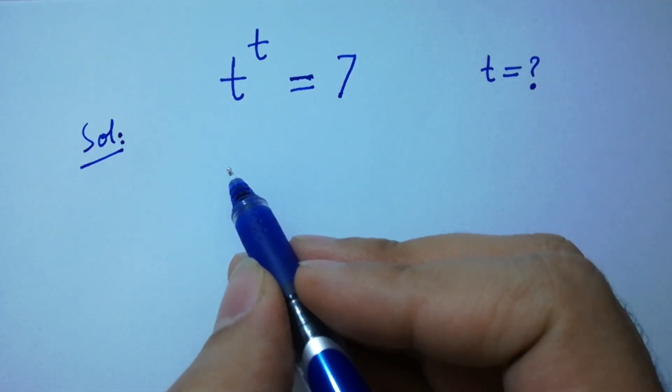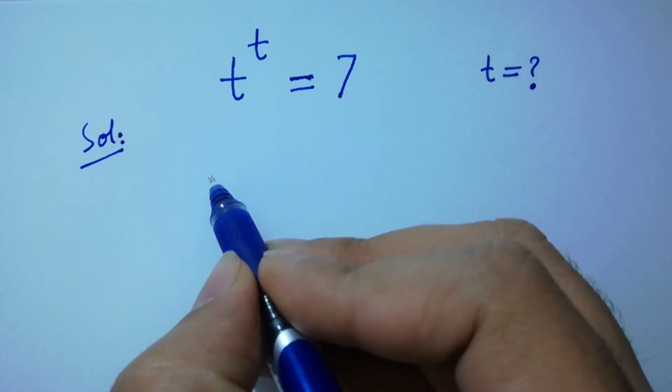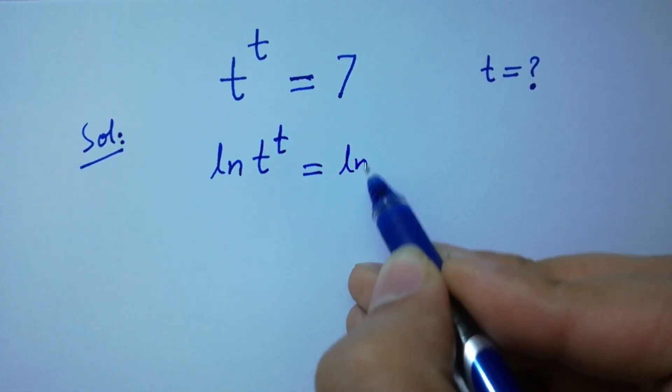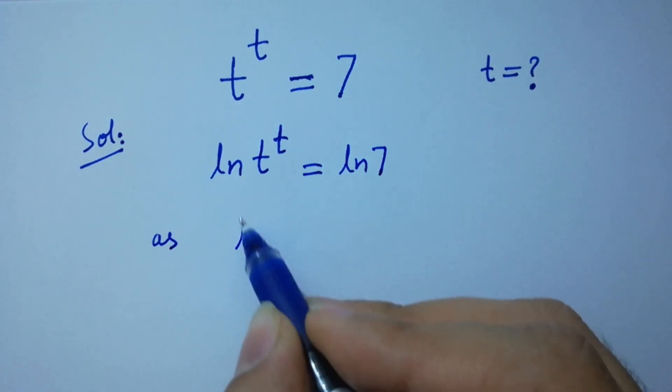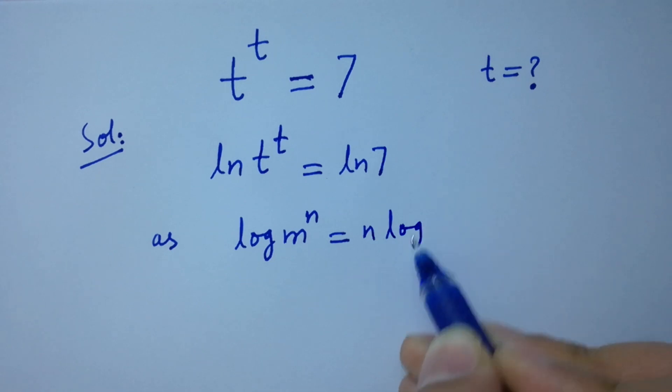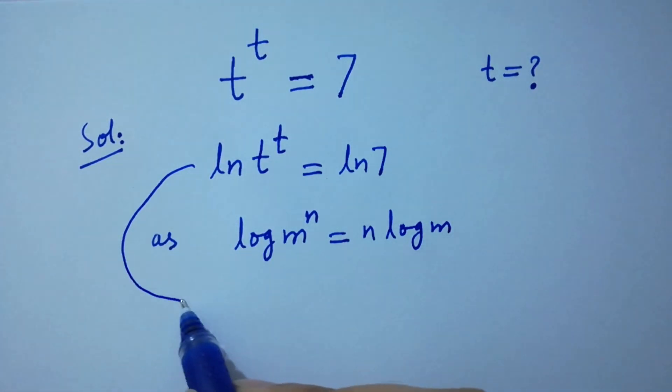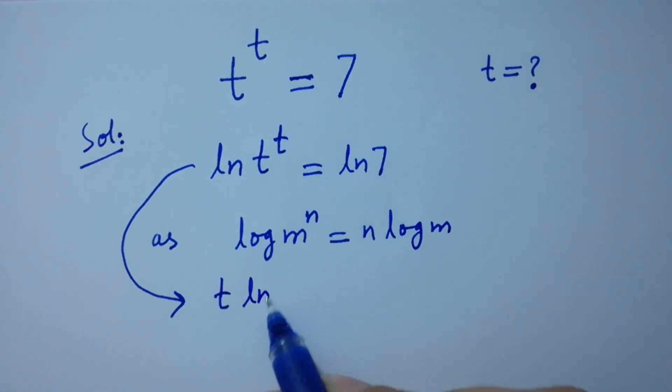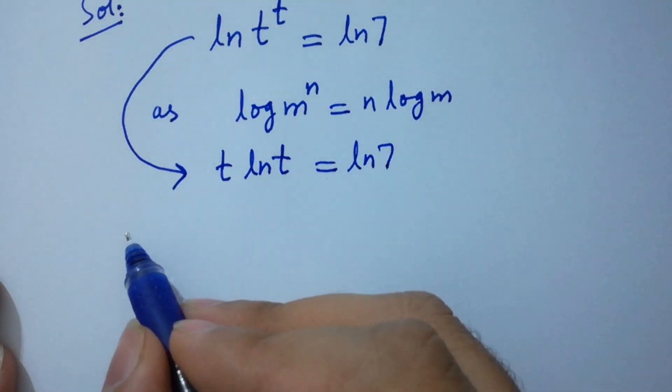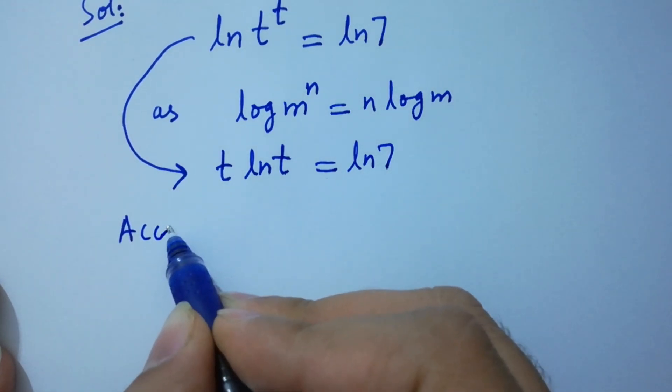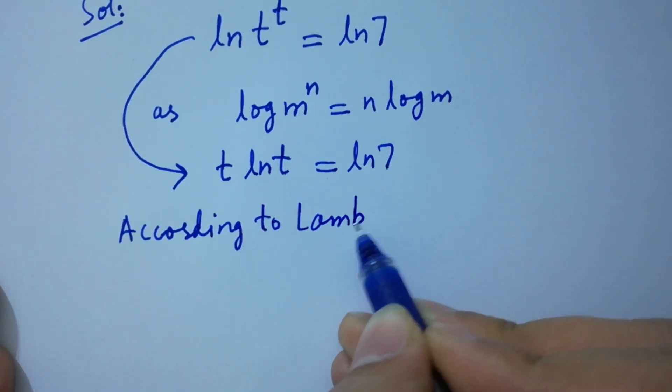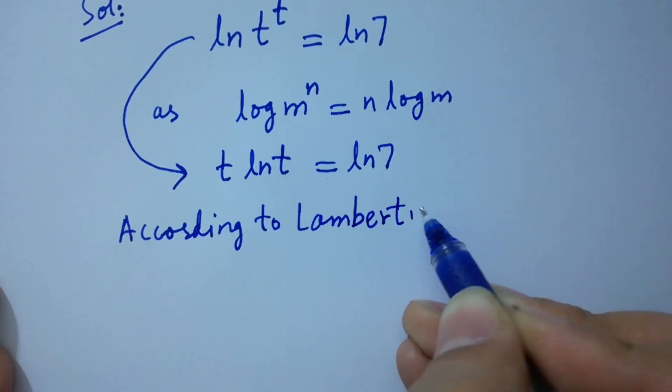To solve this, take natural log on both sides: ln(t^t) equals ln 7. As we know, log m to the power n equals n log m, then it will be t ln t equals ln 7 according to Lambert's W function.